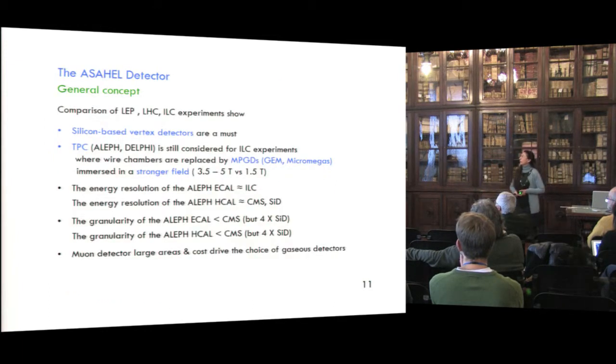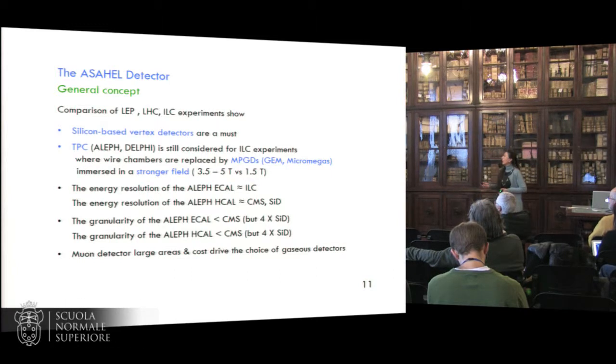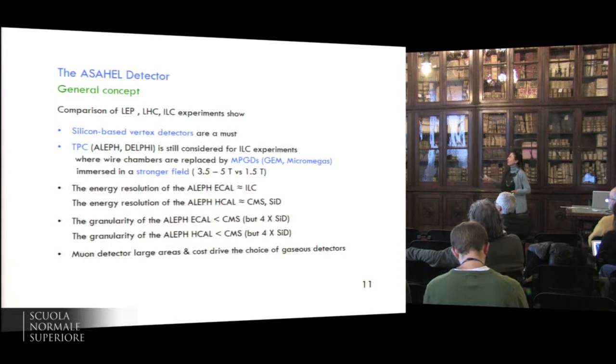So the ASAEL detector is based on the general concept, resulting from the comparison of LEP, LHC and ILC experiments, and that shows that silicon-based vertex detectors are a must. For the TPC, we see that what's used for ALEF and DELPHI is still considered for the ILC experiments, where the wire chambers that were used by ALEF are replaced by MPGDs, either GEM or Micromegas, and they are immersed in a stronger field. It's 3.5 to 5 Tesla compared to 1.5 Tesla. And the energy resolution of the ECAL and HCAL are comparable to what expected at ILC, also comparable for HCAL to that of CMS. And the granularity of the ALEF ECAL and HCAL is better than that of CMS, other than that was used for the physics case of TLEP. And the muon detector, large areas and costs that we have seen, drive the choice of gas-based detectors.